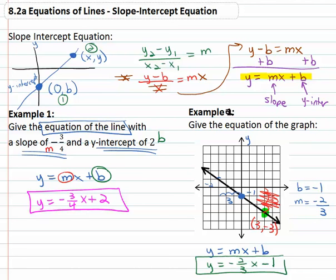If we plug three in for the x, y equals negative two thirds times three minus one. You'll notice the threes divide out. Negative two minus one is negative three, just like we expected for our y value. This equation will give us all the points on the line. The slope intercept equation, if we know the slope and the y-intercept is y equals mx plus b.